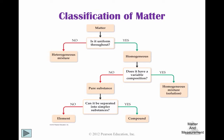If matter is not uniform throughout, that means it is a heterogeneous mixture. A mixture exhibits properties of the substances that make it up. Ask yourself: is it made of more than one thing — more than one compound or more than one molecule? If that's the case, it's a mixture.